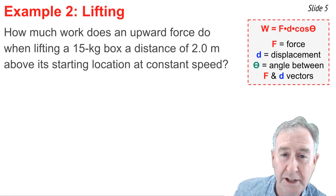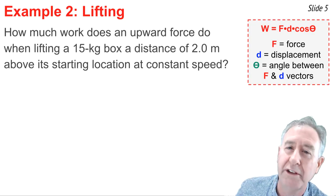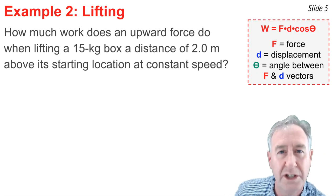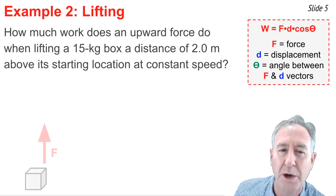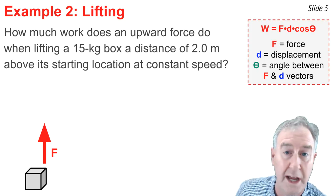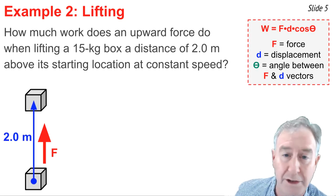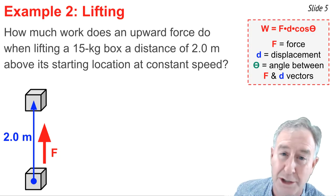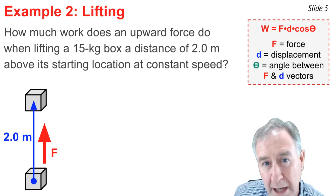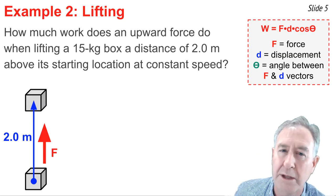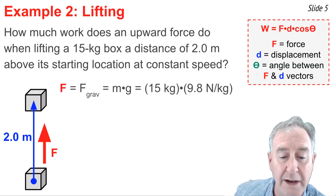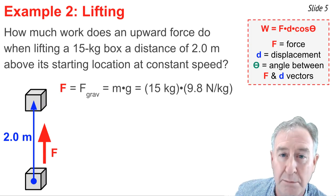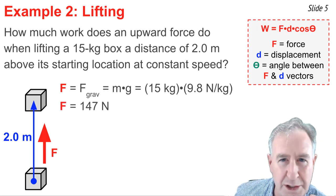The second example involves a lifting motion. I want to know how much work an upward force does when lifting a 15-kilogram box a distance of 2 meters above its starting location at a constant speed. I need to know the force, the displacement, and the angle between force and displacement. I begin with a diagram showing the initial position of the box with a force acting upward to move it to its final position 2 meters above. I know d, but I'm not given f. However, since the box moves at constant speed in a straight line, the forces must balance, meaning the upward force equals the downward force of gravity. Knowing that gravity equals m times g, I calculate this upward force: 15 kilograms times 9.8 newtons per kilogram gives an upward force of 147 newtons.